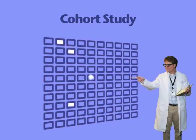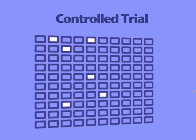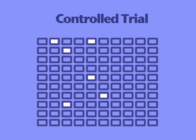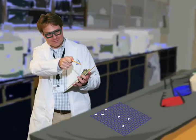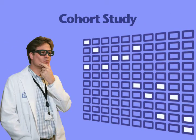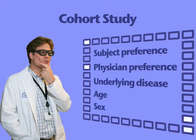Cohort studies come in two varieties. When the investigator assigns an exposure or intervention to each subject — in this case, whether or not the subject uses aspirin — the study is a controlled trial. Subject preference or any other factor related to the subject plays no role in whether the subject is exposed or unexposed. It therefore simulates a laboratory study where the investigator changes one variable while keeping all other variables constant, and then assesses the outcome. In an observational cohort study, the investigator only observes how exposure is distributed among the population. Exposure can therefore depend upon many factors, including subject preference, physician preference, underlying disease, age, sex, and many other variables.